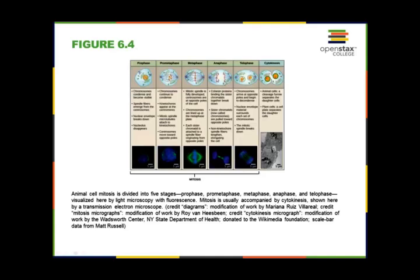During anaphase, the cohesion proteins holding the sister chromatids together break down, and the sister chromatids are pulled apart in opposite directions toward opposite poles. The non-kinetochore spindle fibers lengthen and elongate the cell — you can see it beginning to stretch out. In telophase, the chromosomes arrive at the opposite poles and begin to decondense. A new nuclear envelope forms around each set of chromosomes, and the mitotic spindle breaks down. With cytokinesis in animal cells, a cleavage furrow forms and the cell pinches apart, while plant cells form a cell plate to segregate the two daughter cells.